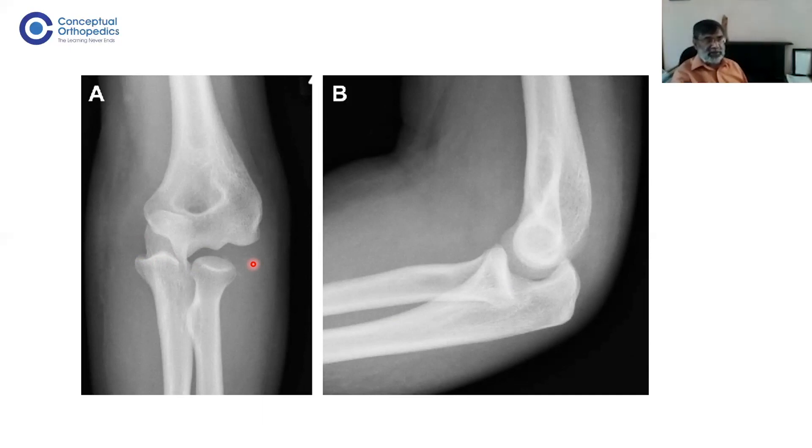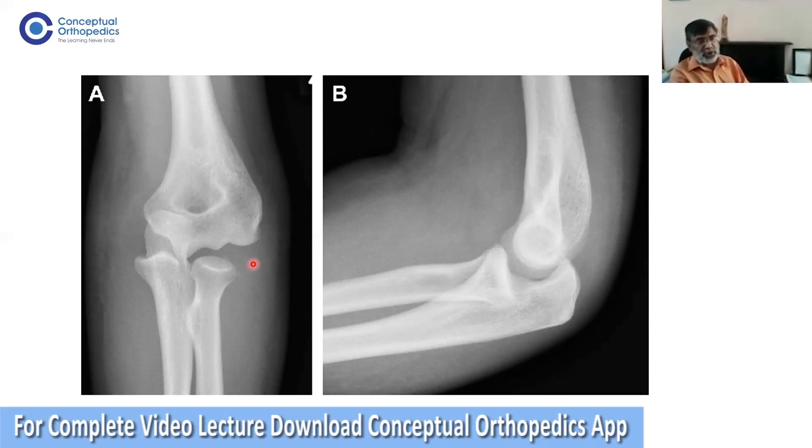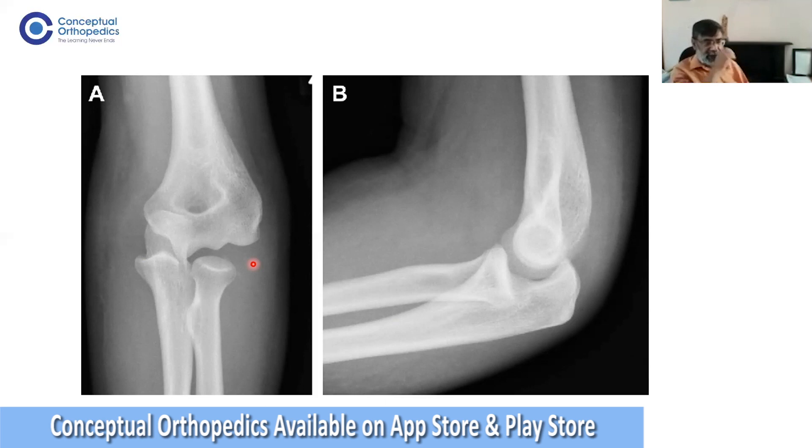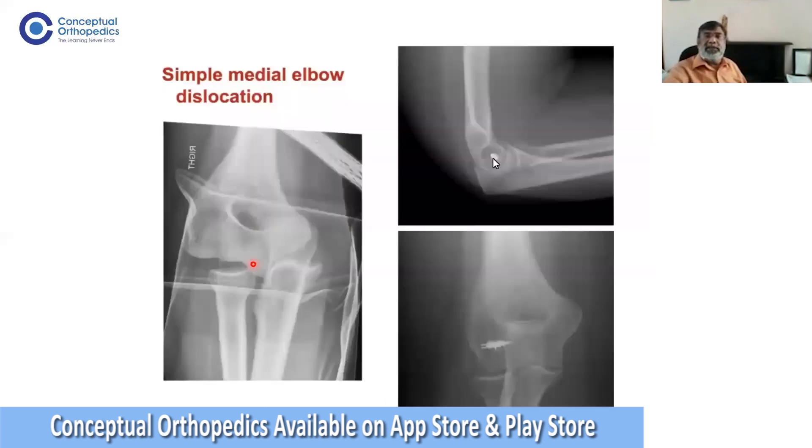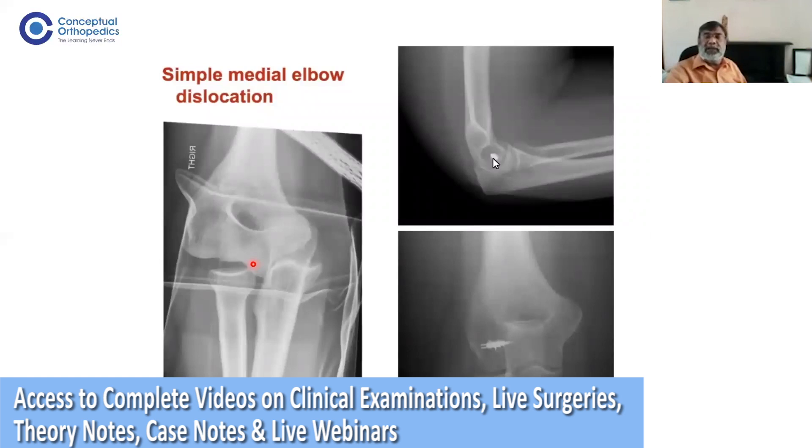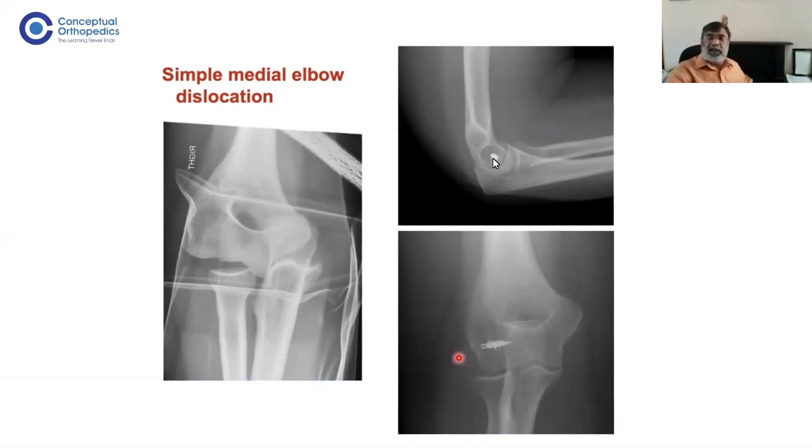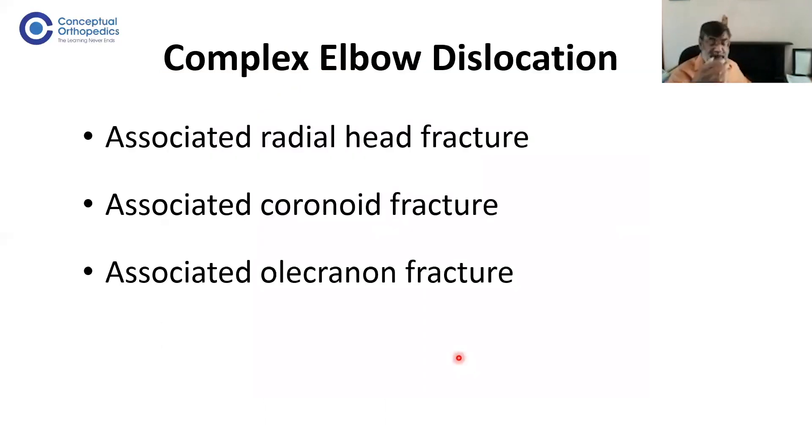For unstable posterolateral elbow dislocation, if in flexion they're still unstable, think first whether you need to continue non-operative treatment with a hinge or static fixator, or operate. If operating, think of doing the lateral side first and then assess stability. Like this medial dislocation case: it was unstable medially but has been stabilized on the lateral side with a lateral anchor to repair the lateral collateral ligament, which gave good stability. Think of LUCL if you're considering repairing one ligament.